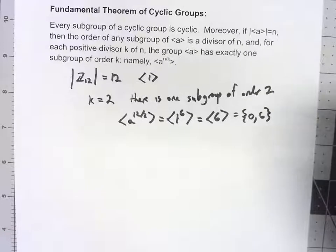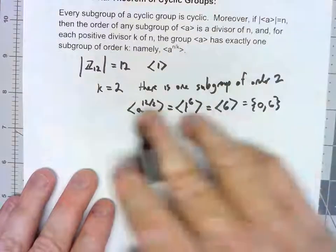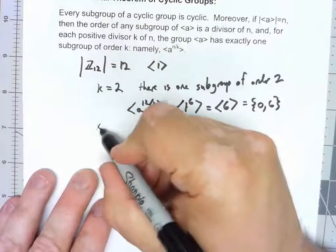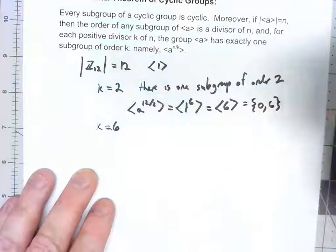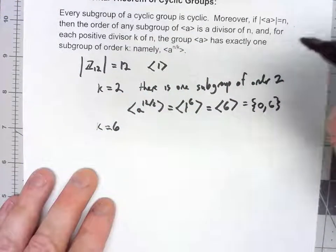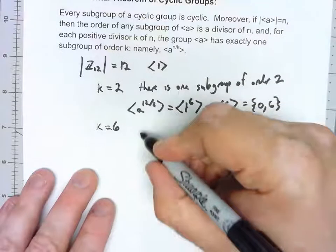Now what's interesting here is let's actually look at a different k. If I were to look at k equals 6, there's one subgroup of order 6.